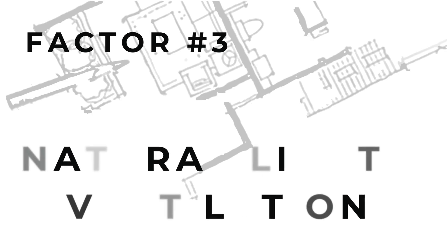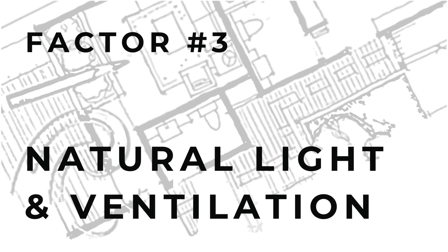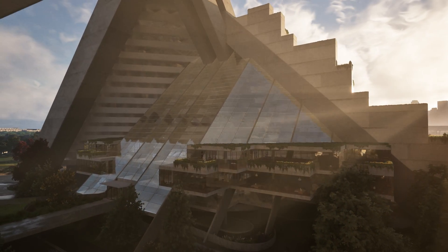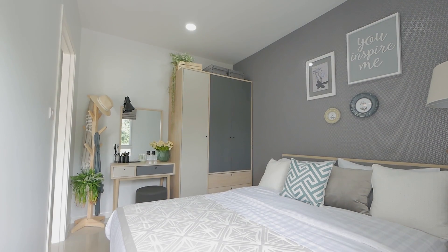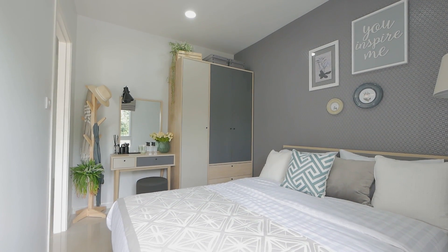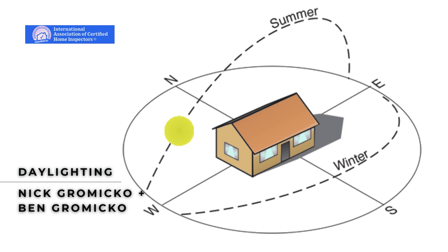The third consideration is natural light and ventilation. Natural light and ventilation influence the mood and ambiance of a space. Smart floor plan design maximizes light and ventilation through strategic orientation. Also consider how sleeping areas should ideally be situated to avoid the harshest sun rays. Here are some guidelines when talking about your fenestration — and by fenestration, I mean windows, doors, and louvers.